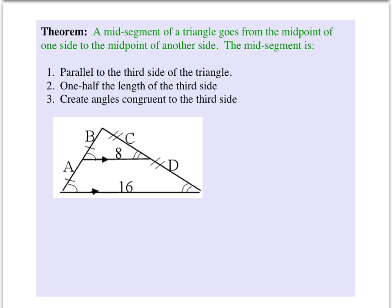So this angle up in here, let's call that angle 1, is congruent to angle 2 because they're corresponding angles. And likewise, these angles are congruent because they're corresponding based on parallel lines. So that is mid-segment of a triangle.